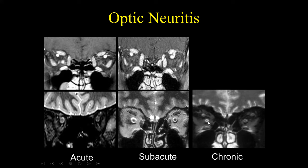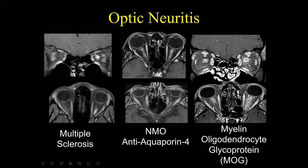In chronic optic neuritis, we get that gliosis involving the optic nerve, where we see a pinpoint decreased caliber of the nerve surrounded by CSF. Not only can we make the diagnosis of optic neuritis, but we can grade it based on the imaging findings — whether it's acute, subacute, or chronic.